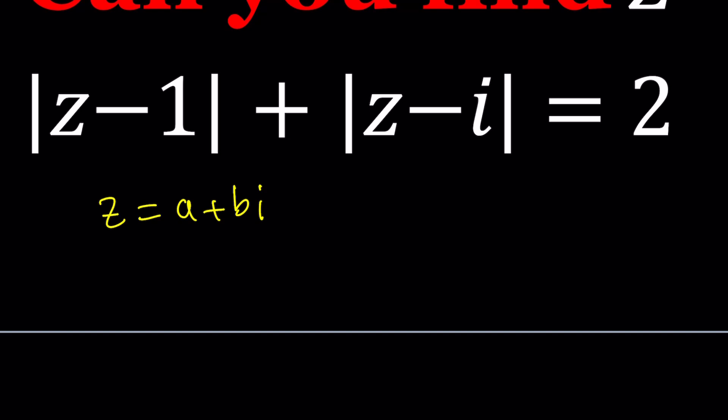Okay, now let's go ahead and replace. What is Z minus 1? It's going to be A minus 1 plus B I. Notice that only the real part is going to change. And then when we subtract I, the imaginary part is going to change. So it's going to be A plus B minus 1 I. So notice that they are different, right? Great.